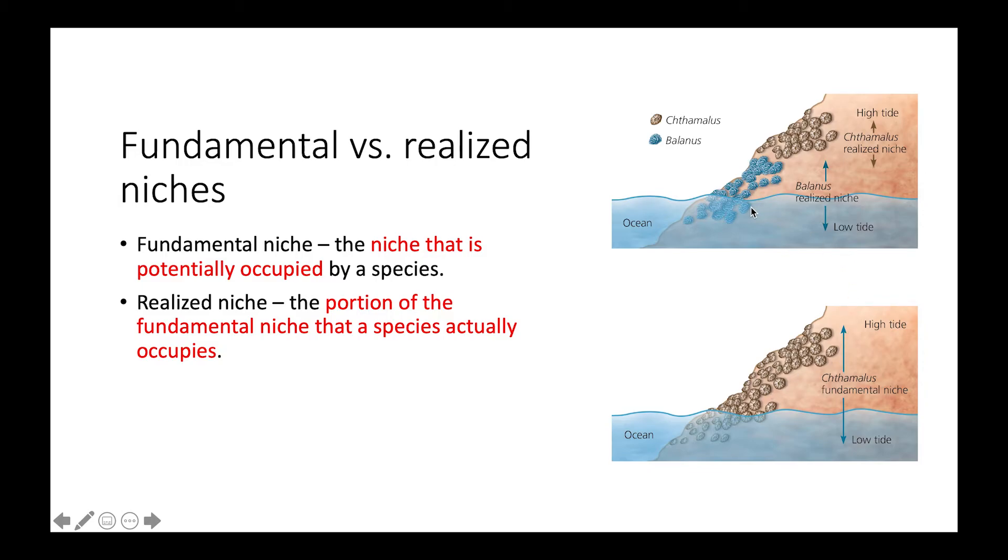However, when it's interacting and coexisting with Balanus, we have a much smaller species distribution, so that would be the realized niche of Thamelis. This would also be the realized niche of Balanus because now we know that they're interacting.